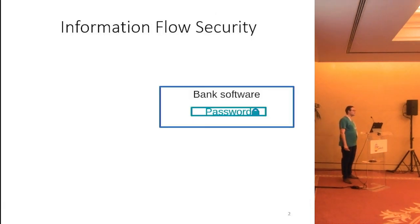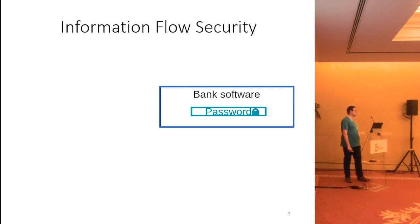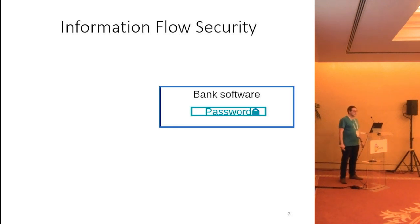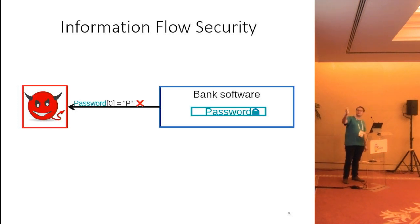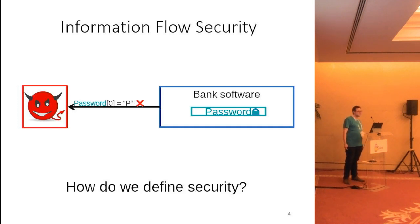The first thing you need to know is that this is a paper about information flow security. Information flow security considers a software with a secret or secrets, for example, a password, and it wants to prevent an attacker from learning the secrets or part of the secret — for example, that the password starts with a P. In our work, in particular, we are interested in how we define security formally in such a setting.